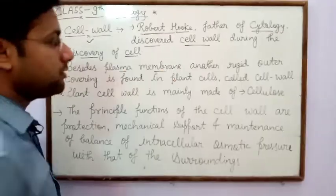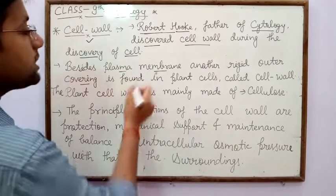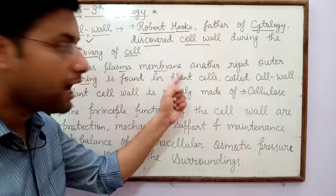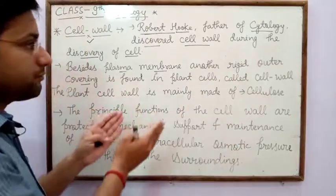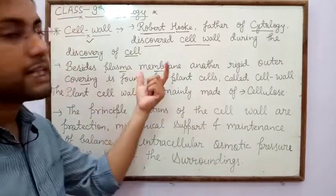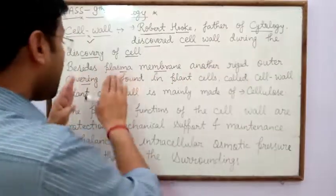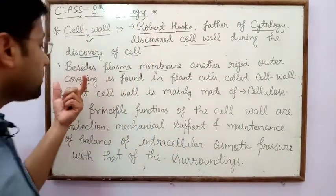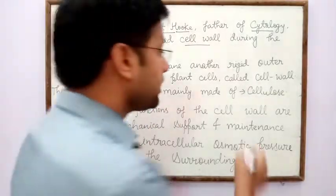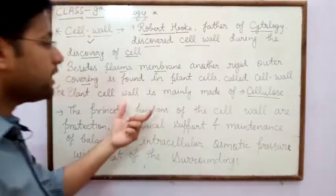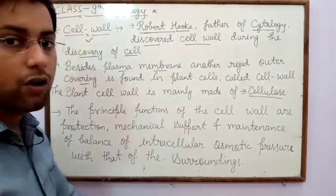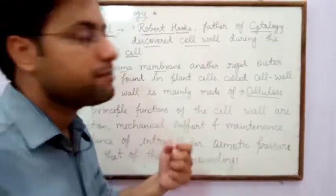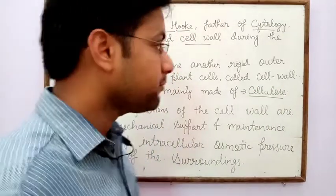Besides plasma membrane, another rigid outer covering is found in plant cell. It is more rigid than plasma membrane and is the outer covering found in plant cells, called cell wall. The plant cell wall is mainly made up of cellulose. This is a very important question for all competitive examinations as well as school examinations.